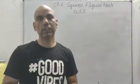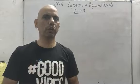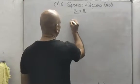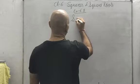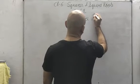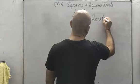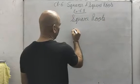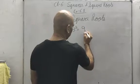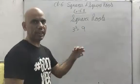For this we will have to understand that square and square root are the inverse of each other. Since the square of 3 is 9, so the square root of 9 is 3.